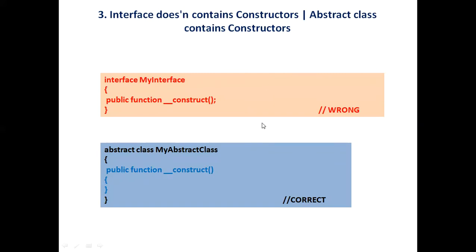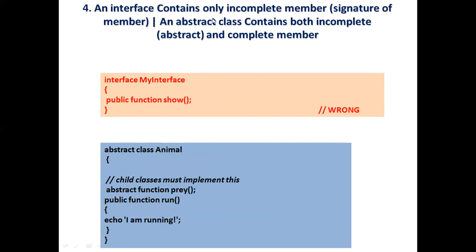Third point: interface does not contain constructors while abstract class contains constructors. So if you make a constructor inside an interface, it is wrong. While in abstract class you can normally create constructors.